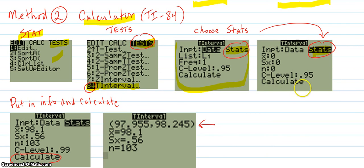Now you're getting ready to put in all the information that you have. You're on the stats. You put in 98.1, which is the sample mean. The sample standard deviation is 0.56. The n size is 103. The confidence level that you want was 0.99. Arrow down to calculate. Press enter. And you get this answer right here.